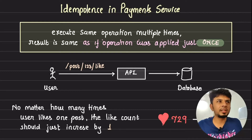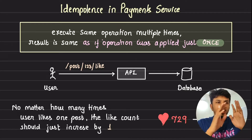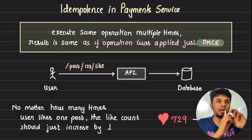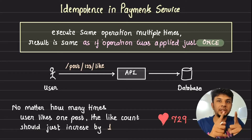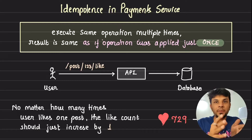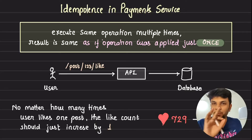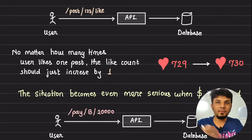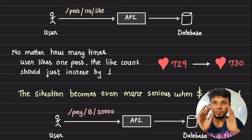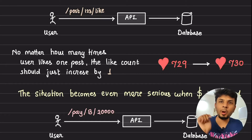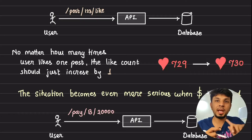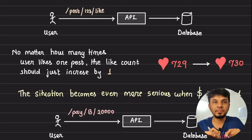So what exactly is idempotency? To put it very simply, your API endpoint or service is idempotent when if you execute the same operation multiple times, the result of multiple executions is the same as if that operation was run just once. For example, on Instagram when you're scrolling your feed and you like a photo by double tapping it, the like count increases by one. No matter how many times you double tap it, no matter how many times the backend API call goes, the like count doesn't change. This is exactly what it means when we say an API is idempotent.